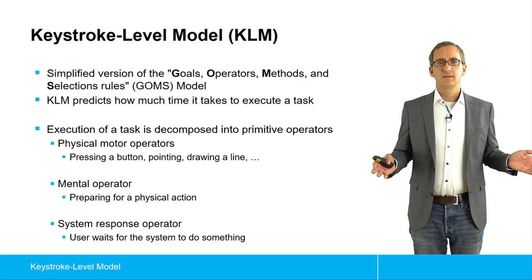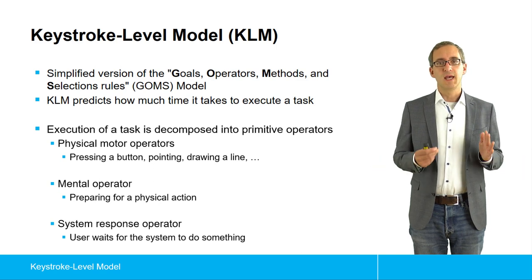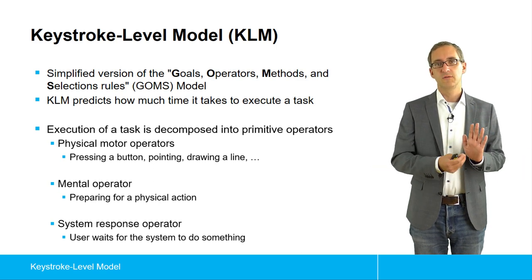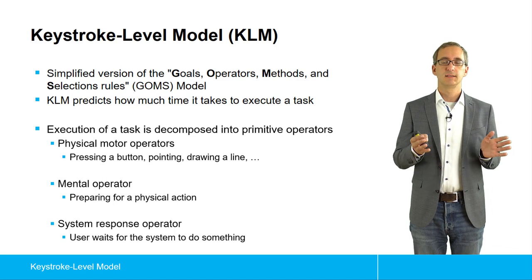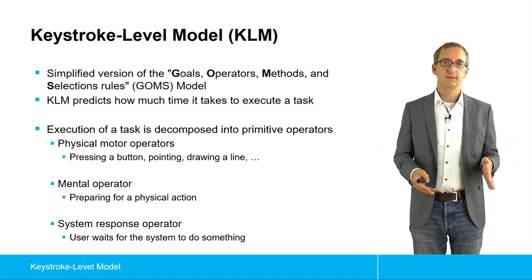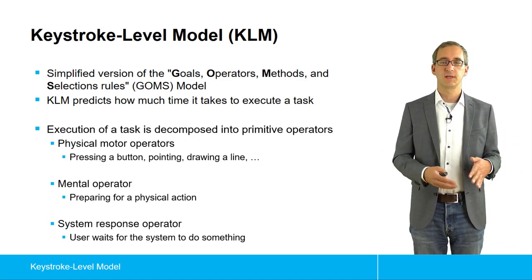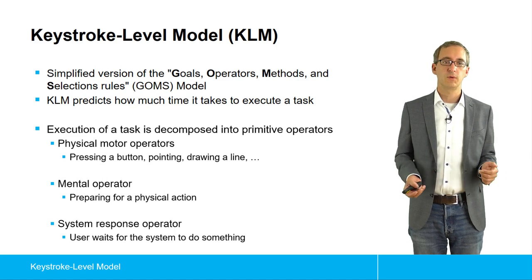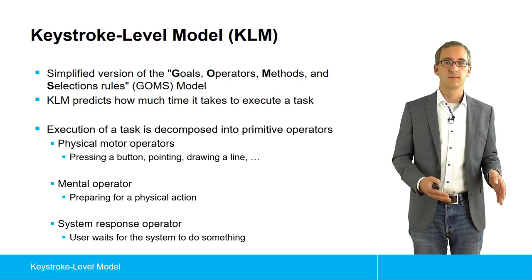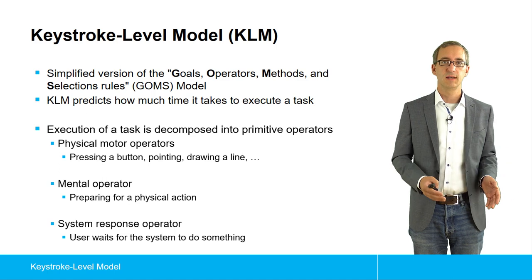What does KLM consist of? Basically it's a list of operators. These primitive operators are grouped in three groups. There's a big group of physical motor operators, including pressing a button, pointing, drawing a line, hitting a key.